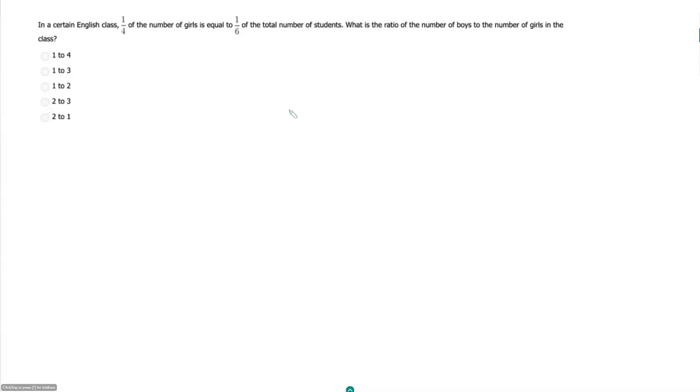In a certain English class, one-fourth of the number of girls is equal to one-sixth of the total number of students. What is the ratio of the number of boys to the number of girls in the class?